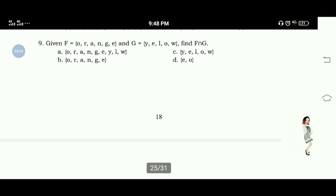Number 9: Given set F equals elements O, R, A, N, G, E, and set G equals elements Y, A, L, O, W, find F intersection G. Intersection, yun yung element na magkapareho sa dalawang set. The answer for number 9 is Letter D. The elements O and E are common to set F and G.